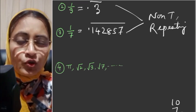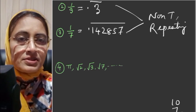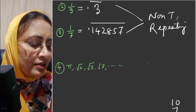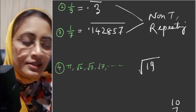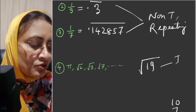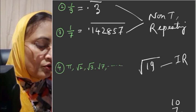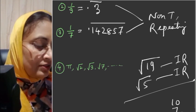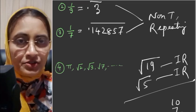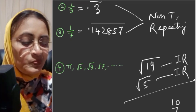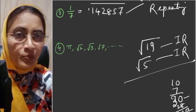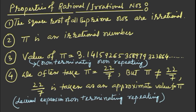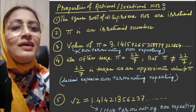The square roots of all prime numbers are irrational numbers. For example, the square root of 19 is irrational. Similarly, the square roots of 7, 3, 2, and 5 are all irrational numbers — the square root of any prime number is irrational.